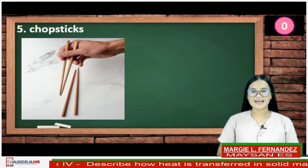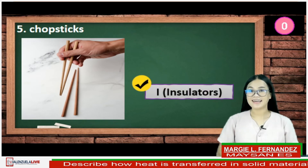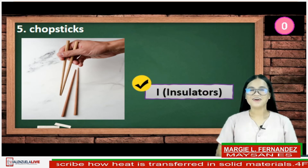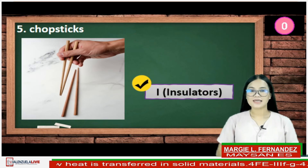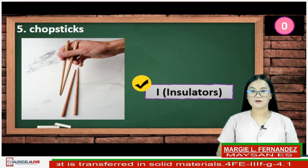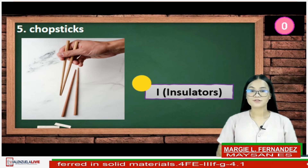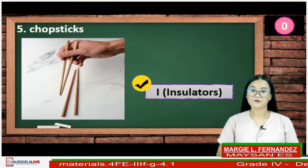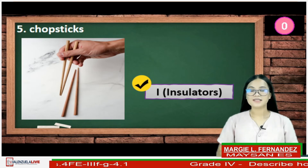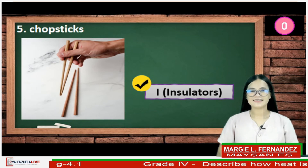If your answer is I, you are intelligent. The chopsticks were made out of wood. Heat travels very slowly through wooden objects, therefore wooden chopsticks are insulators. Good job, kids!